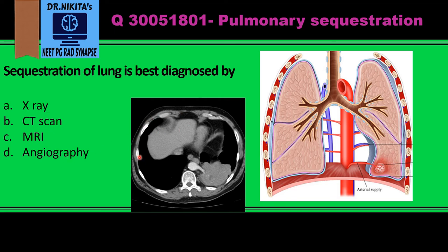This is a contrast-enhanced CT scan where this is the aorta, and we see this branch coming from the aorta which is supplying this part of the lung. So this becomes pulmonary sequestration.